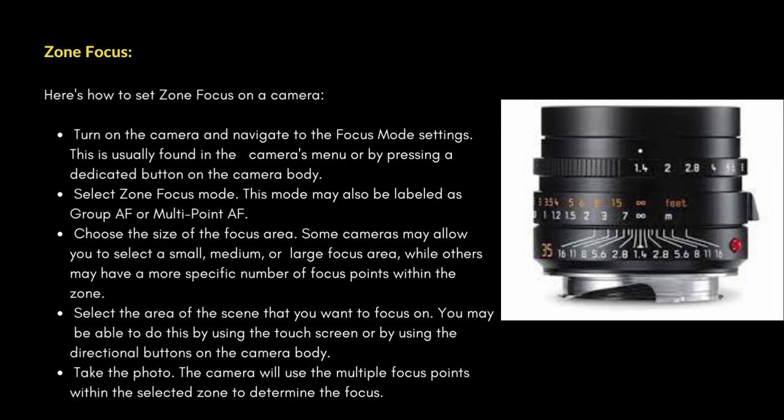Turn on the camera and navigate to the focus mode settings, usually found in the camera's menu or by pressing a dedicated button on the camera body. Select zone focus mode — this mode may also be labeled as group AF or multi-point AF. Choose the size of the focus area; some cameras may allow you to select a small, medium, or large focus area, while others may have a more specific number of focus points within the zone.